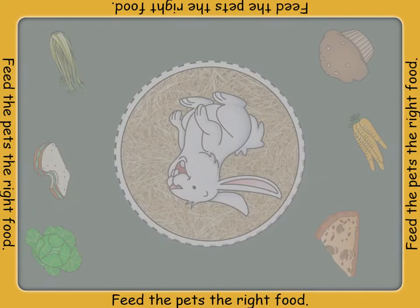Your job in the classroom is to feed the class pet. Look at the food around the pet. Which type of food would you feed a pet rabbit or mouse? Give the right food to the animal by dragging it into the center.